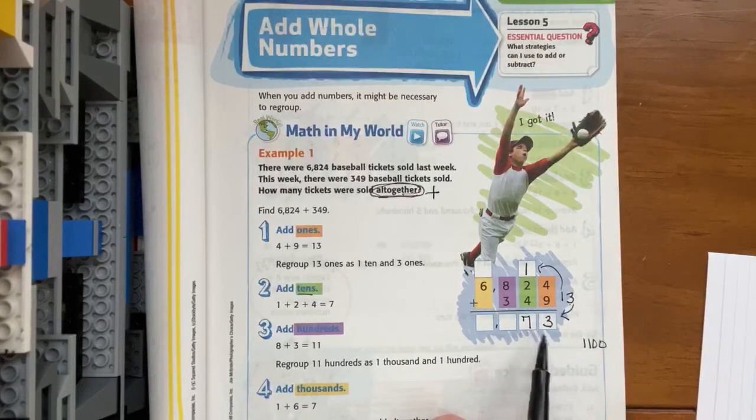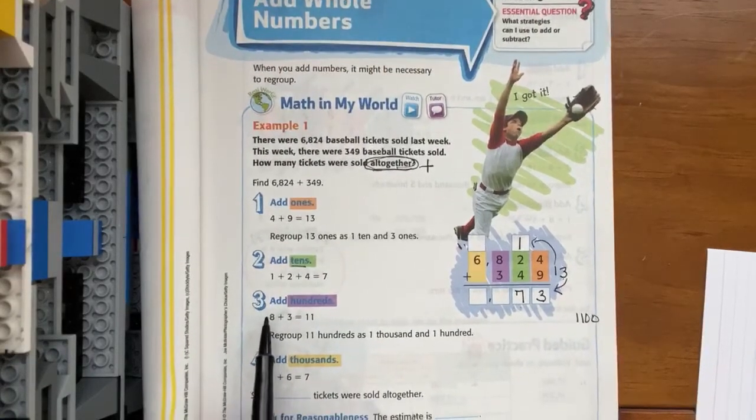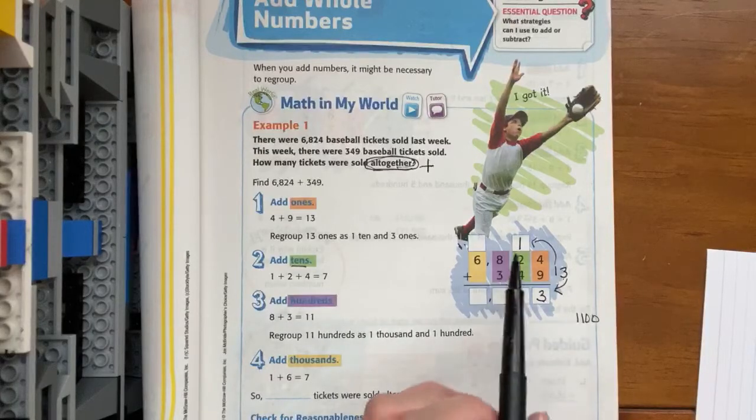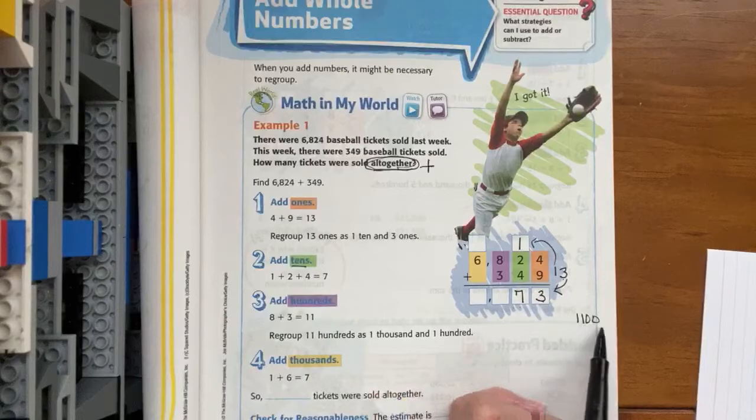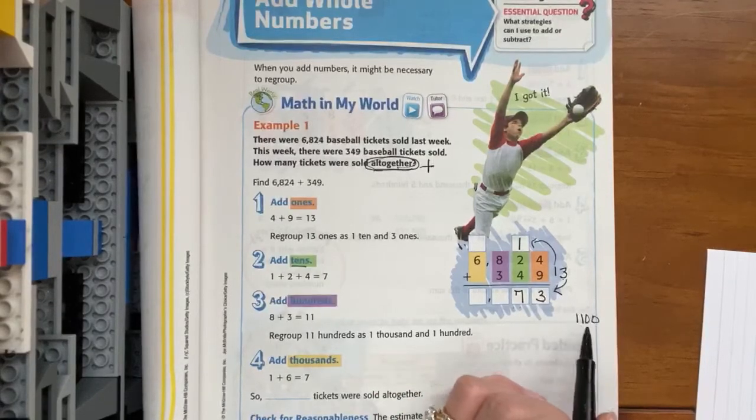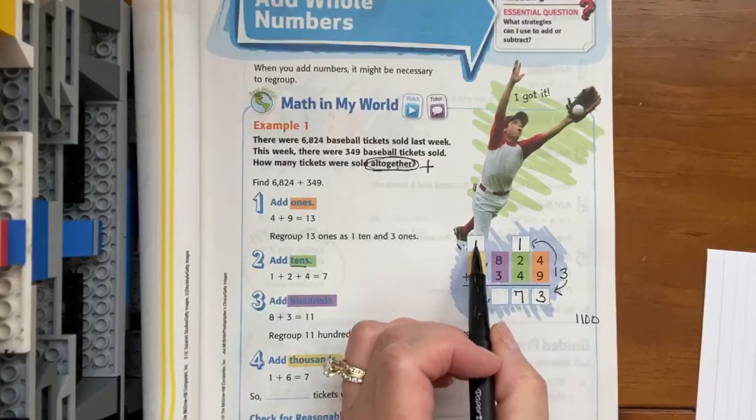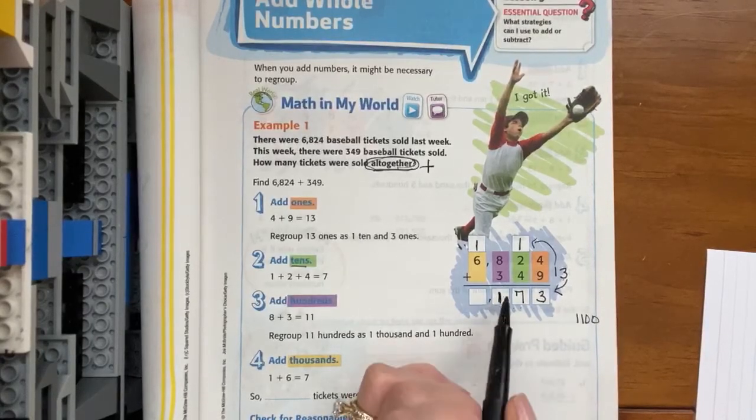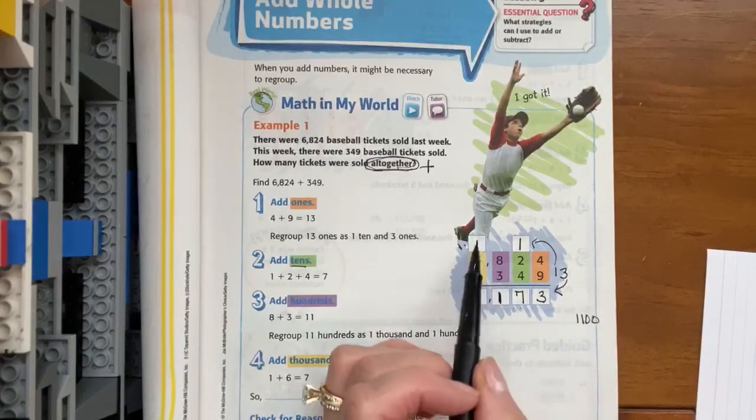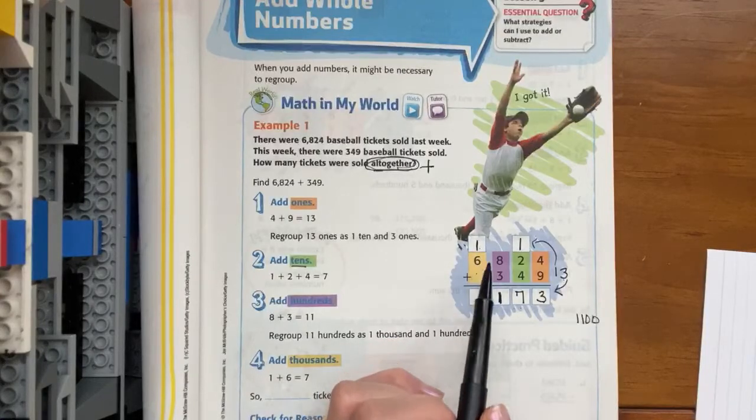Step three tells us to add the hundreds. We have eight groups of 100 plus three groups of 100 gives us 1100, which is really one group of a thousand and one group of a hundred. So we record your one group of a hundred here, and we regroup the thousands into the thousands column.